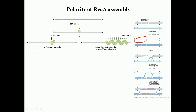Once the 3' overhang is generated, the second step is the addition of RecA proteins. Many RecA proteins bind to every three nucleotide sequences, coating the 3' overhang just like SSB proteins in DNA replication. RecA forms a filament surrounding the single-stranded DNA, which prepares the 3' overhang for invasion into the intact DNA strand.